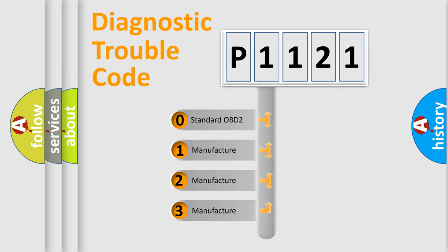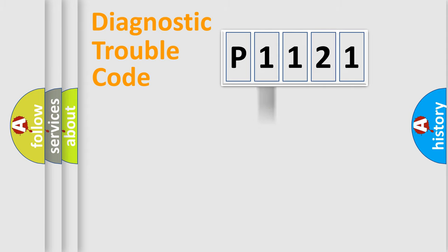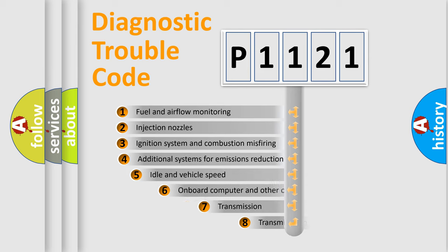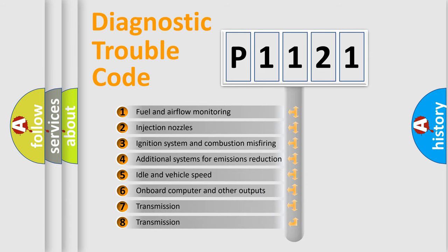If the second character is expressed as zero, it is a standardized error. In the case of numbers 1, 2, or 3, it is a car-specific error. The third character specifies a subset of errors.